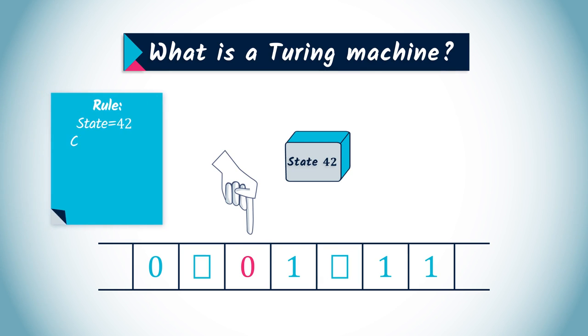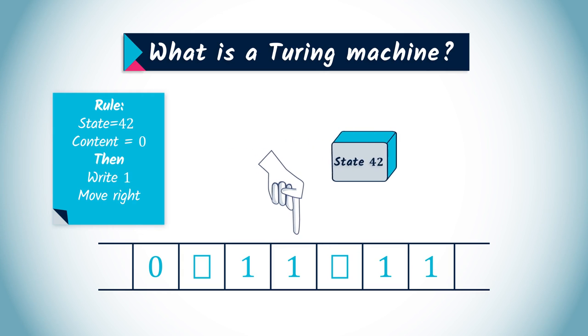As a consequence, the machine is determined by a list of rules, like if the character is a zero and the machine is in state 42, then change the zero into a one, move right, and change to state 17.